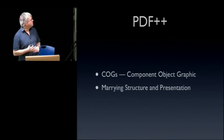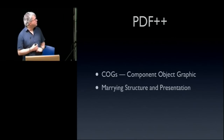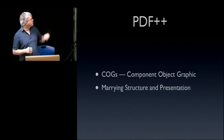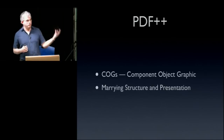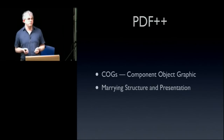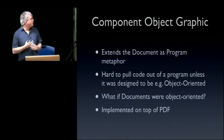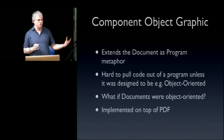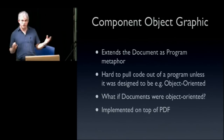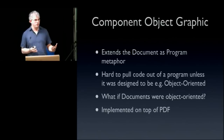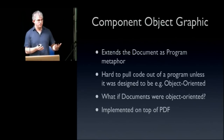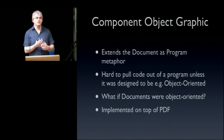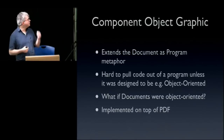The first piece of work was actually the topic of the speaker's PhD — called COGS, the Component Object Graphic System — which was basically an attempt to extend the metaphor of the document as a computer program. Just as it's hard to pull code out of a PDF in the same way it's hard to pull code out of a program, we've developed tools when writing software to make this easier — such as object-oriented programs where things are written as objects designed to be pulled out and reused. So we asked: what if documents were object-oriented?